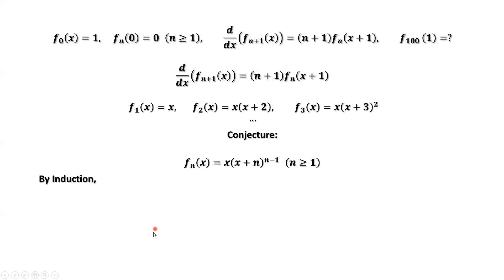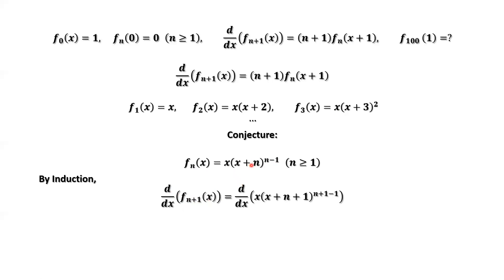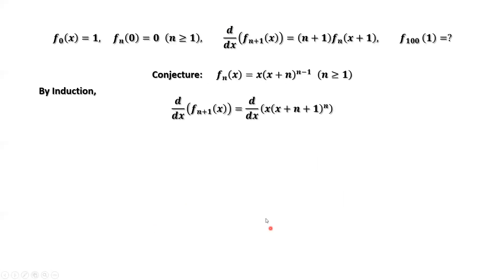We look at the derivative of fn+1 of x. We replace the inside part by this formula. Here, n plus 1, so that's (n+1) to the power (n+1 minus 1). Then we have the derivative of x times (x + n+1) to the power n. The inside part is a product, so we apply the product rule.